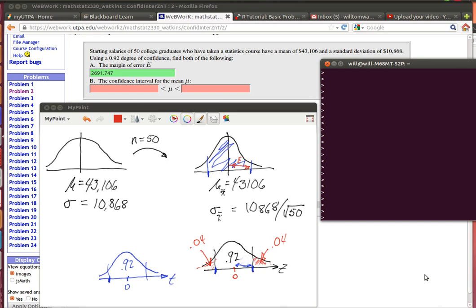In a previous video I was clumsier than I wanted to be in explaining how to find the E value in a confidence interval. This is a setup from problem number 2 in a WebWork homework.